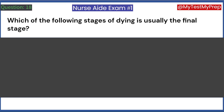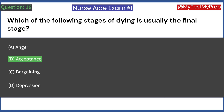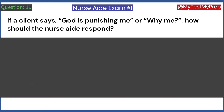Which of the following stages of dying is usually the final stage? A. Anger. B. Acceptance. C. Bargaining. D. Depression. Answer: B. Acceptance.